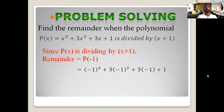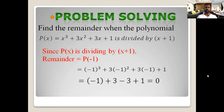Replace x by minus 1 in the given polynomial: (minus 1)³ plus 3 times (minus 1)² plus 3 times (minus 1) plus 1 equals minus 1 plus 3 minus 3 plus 1. Simplifying, minus 1 and plus 1 cancel, and 3 and minus 3 cancel, giving remainder equal to 0.